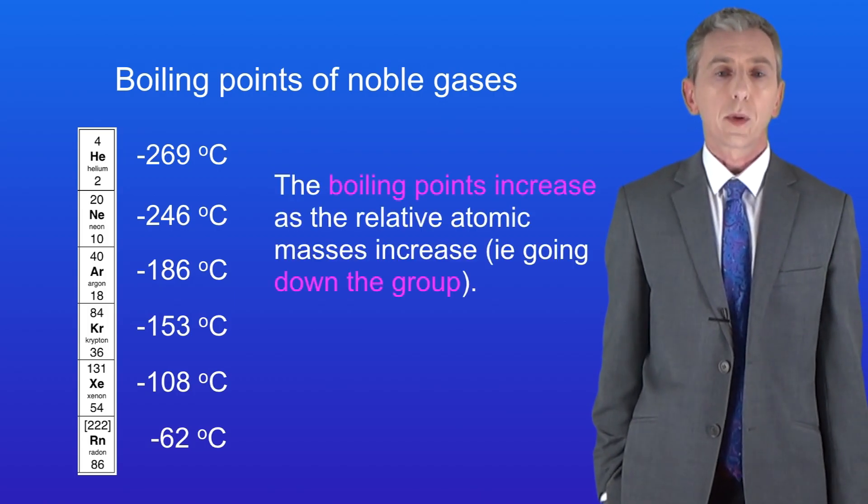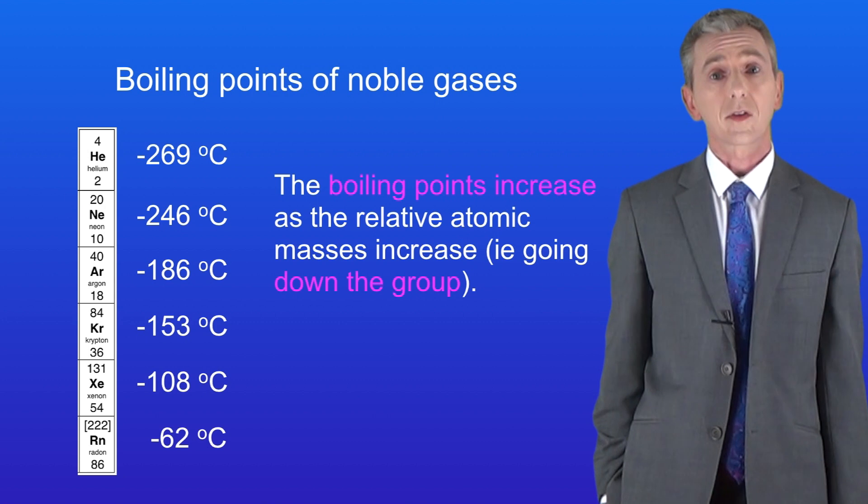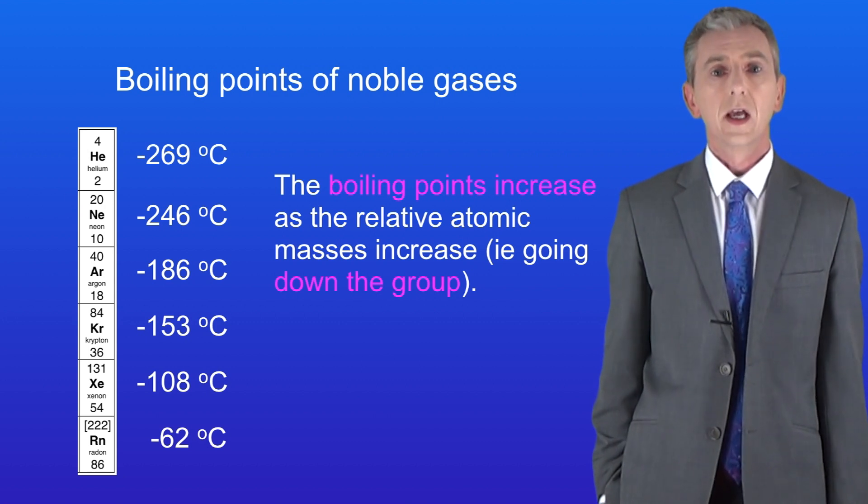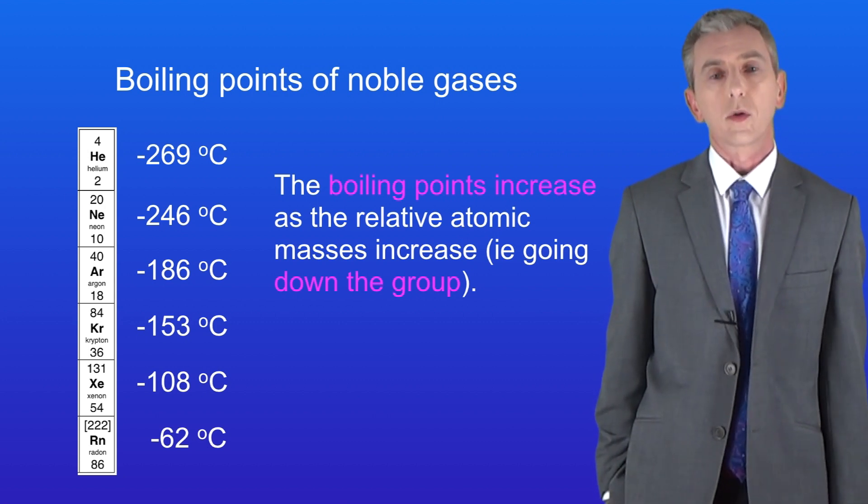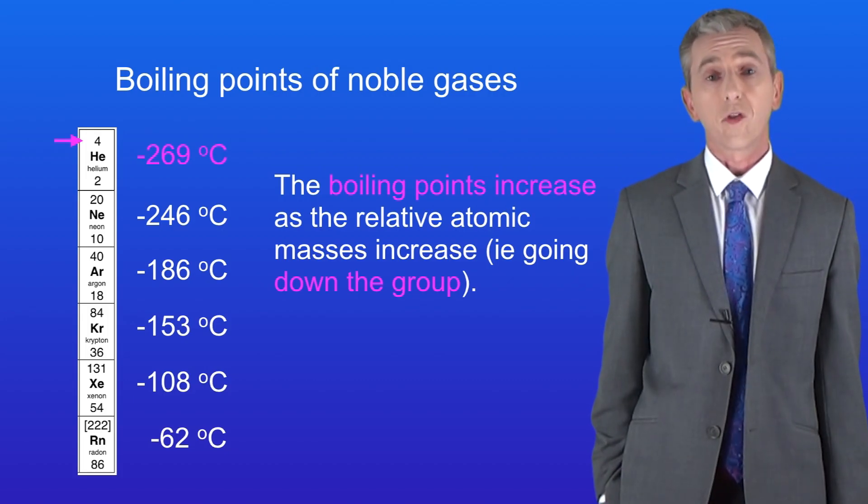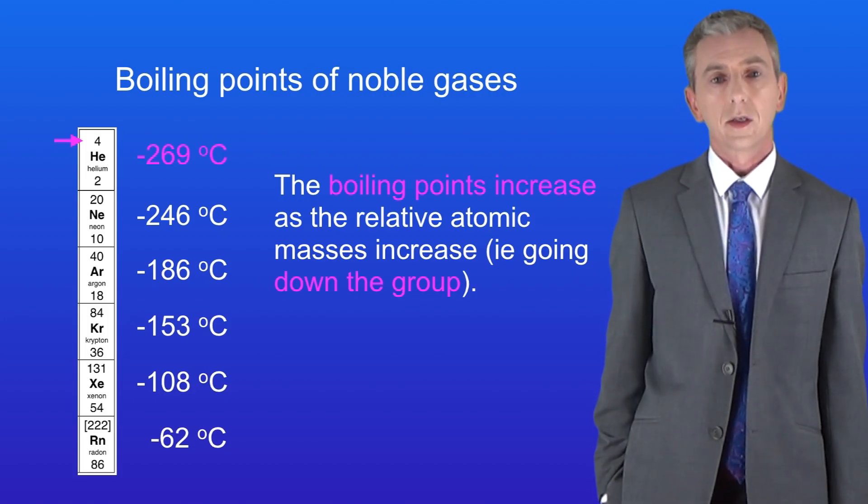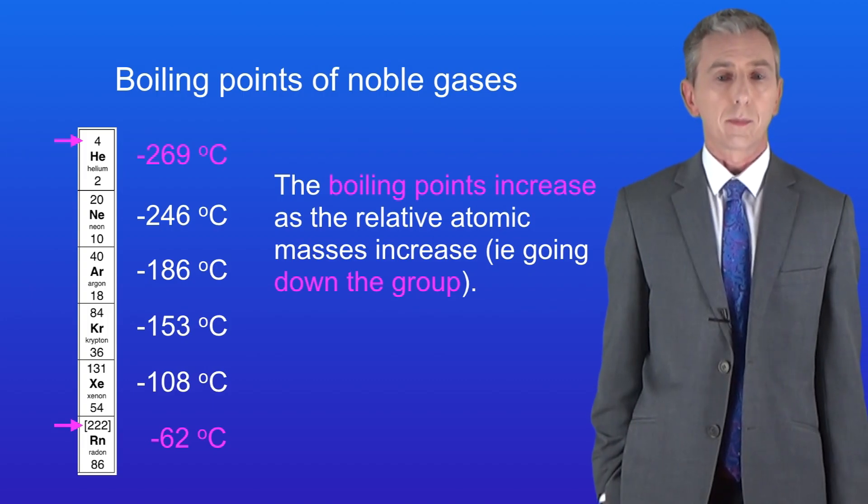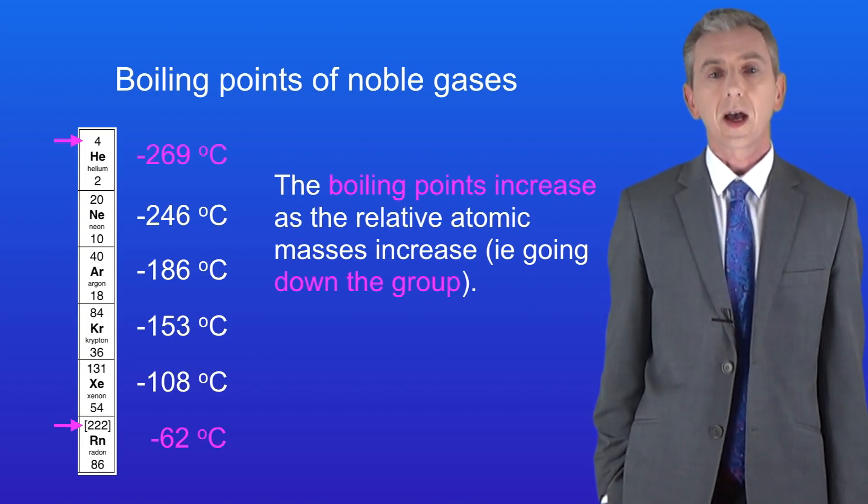Now as you can see the boiling points of the noble gases increase as the relative atomic mass increases, in other words going down group zero. So helium with a relative atomic mass of four has the lowest boiling point and radon with a relative atomic mass of 222 has the highest.